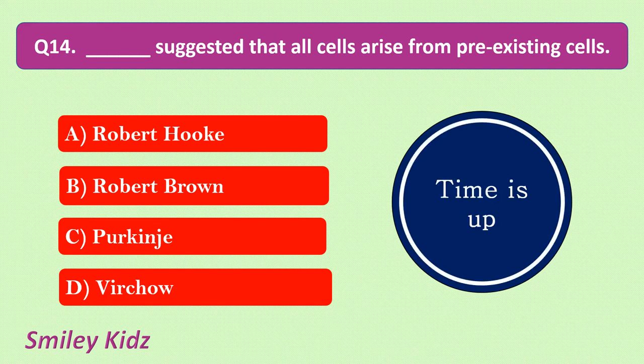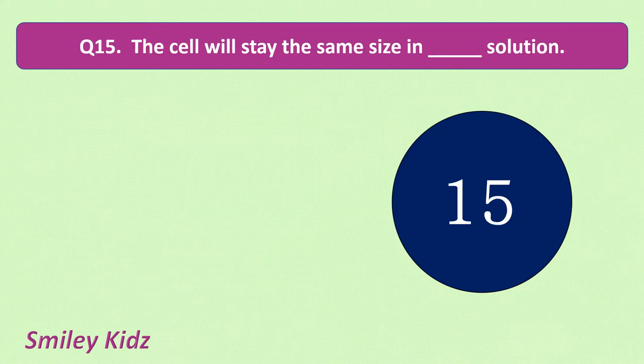Your time is up and the correct answer is Virchow. Virchow suggested that all cells arise from preexisting cells.